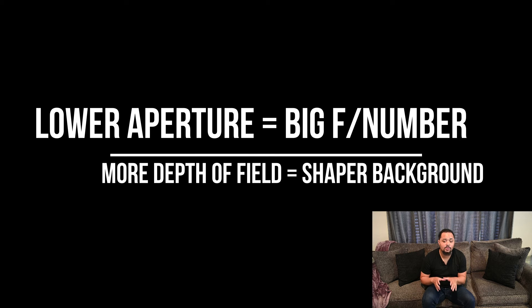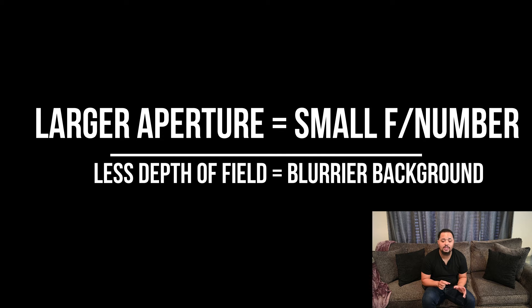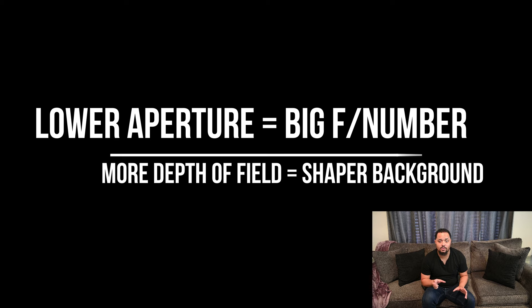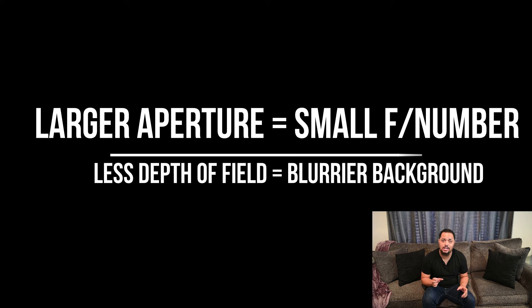Part three: a lower aperture, which is a big f-stop number, equals more depth of field, which equals a sharper background. A larger aperture, which is a smaller f-number, equals less depth of field, which equals a blurrier background. Lower aperture equals more depth of field, sharper background. Larger aperture equals less depth of field, blurry background.